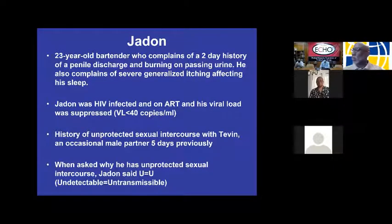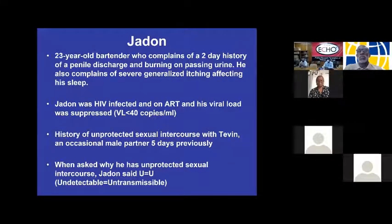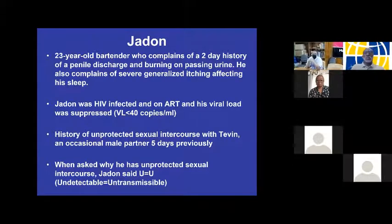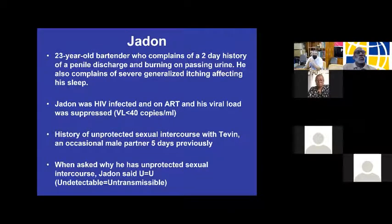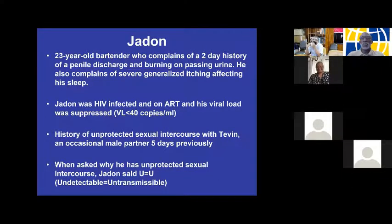The first case: Jaden complains of a two-day history of penile discharge and burning when passing urine. He also complains of severe generalized itching all over at night — he can't sleep. The itching has been going on for about three weeks. Jaden is known to be HIV-infected, on antiretroviral therapy, and virally suppressed. He had unprotected sexual intercourse with Tevin, an occasional male partner, five days previously. When asked how he could have unprotected sex being HIV-infected, he said 'U equals U' — undetectable means untransmissible.